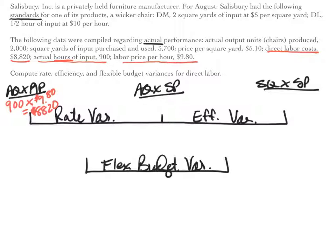Let's look at peg two. We already have actual quantity, so we're just going to bring that on over. Now I need a standard price — the price that I should have paid per hour of labor. The standards tell us that the standard was ten dollars per hour. Multiplying these through, I get actual quantity times standard price of nine thousand dollars.